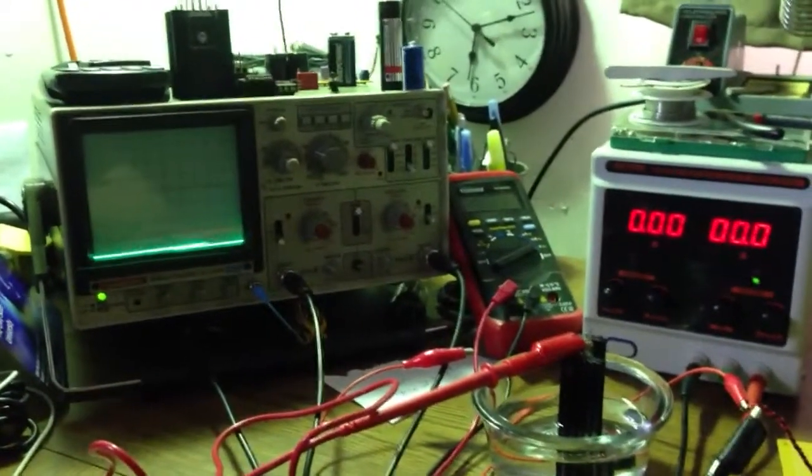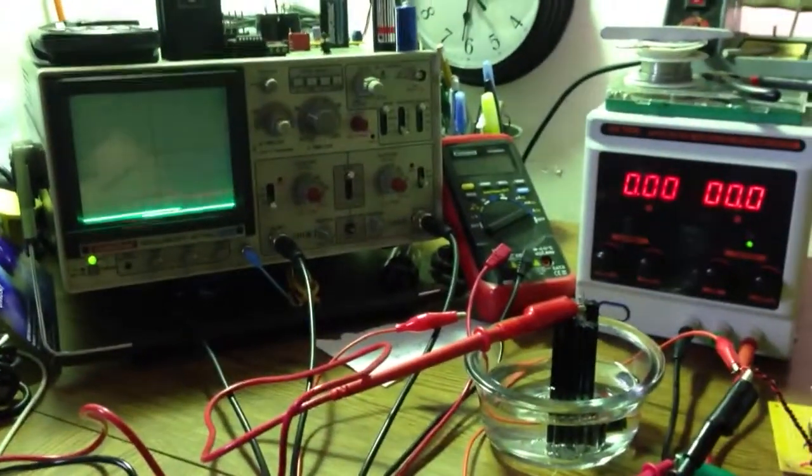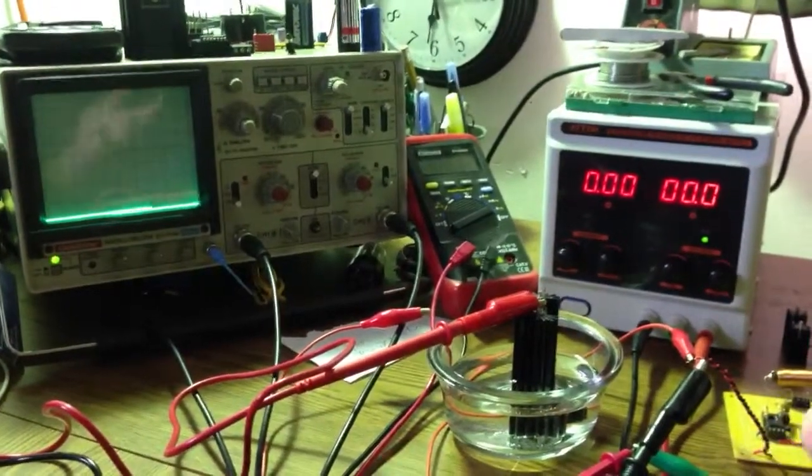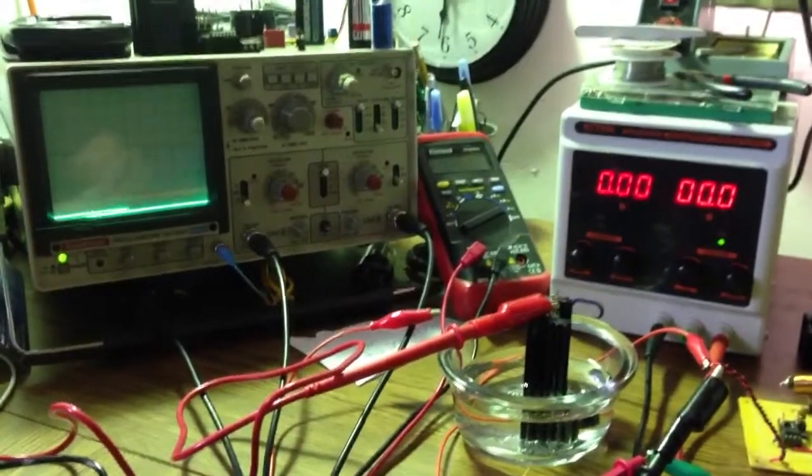Again, the scope is anode voltage, the meter which you can't see is anode current, and the bench supply is the gate voltage and grid used to MOSFETs. Anyway, let's go.